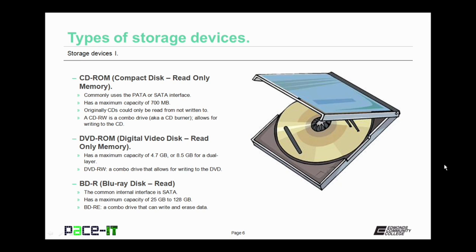Technology marches on, and we came up with the DVD-ROM, the digital video disk read-only memory. It has a maximum capacity of 4.7 gigabytes in its single-layer format, and 8.5 gigabytes for a dual-layer format DVD. DVDs also came out in the DVD-RW — just like the CD-RW, it's a combo drive that allows for writing to the DVD.